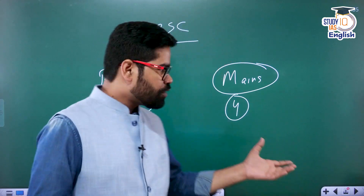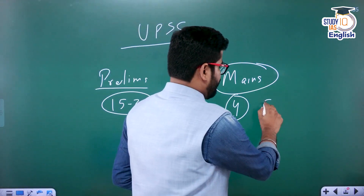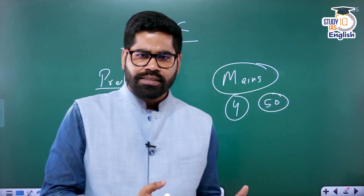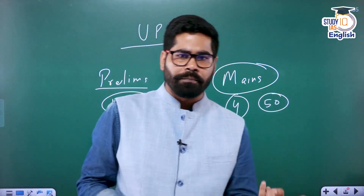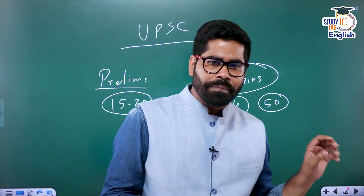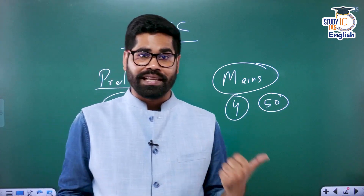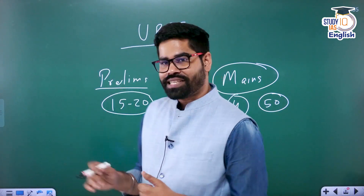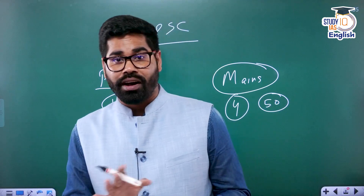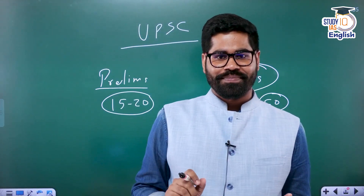So this is going to give you roughly around 50 marks — two questions are of 10 marks and then two questions are of 15 marks each, so 20 plus 30, roughly around 50 marks can be assured from this section in the mains examination. And on the prelim side again, you can see it is going to give you around 30 marks, and these are easy 30 marks.